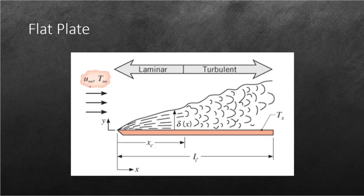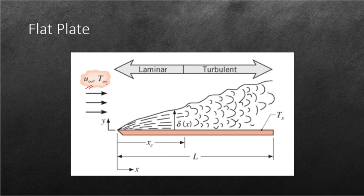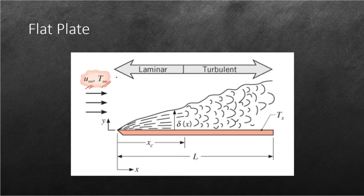So here we have our U as our flow speed since our flow will be categorized as forced convection, and our temperature for the fluid should also be known. Our surface temperature is denoted by TS and the length of the plate is denoted by L.